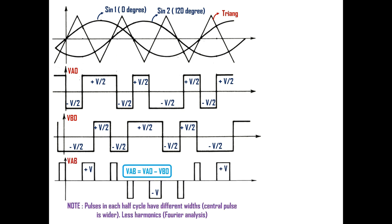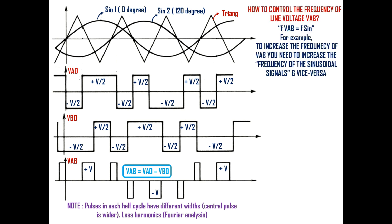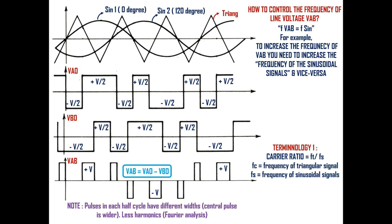The line voltage VAB equals VA0 minus VB0, so VAB will have plus V and minus V pulses in each half cycle as shown. There are three pulses in each half cycle with different widths, and the central pulse is usually wider. Fourier analysis reveals it has less harmonic content than a single pulse per half cycle. The frequency of line voltage VAB equals the frequency of the sinusoidal signals, so increasing or decreasing the sinusoidal signal frequency will correspondingly change the line voltage frequency. Carrier ratio is the ratio of the triangular signal frequency to the sinusoidal signal frequency, and it determines the number of pulses per half cycle.